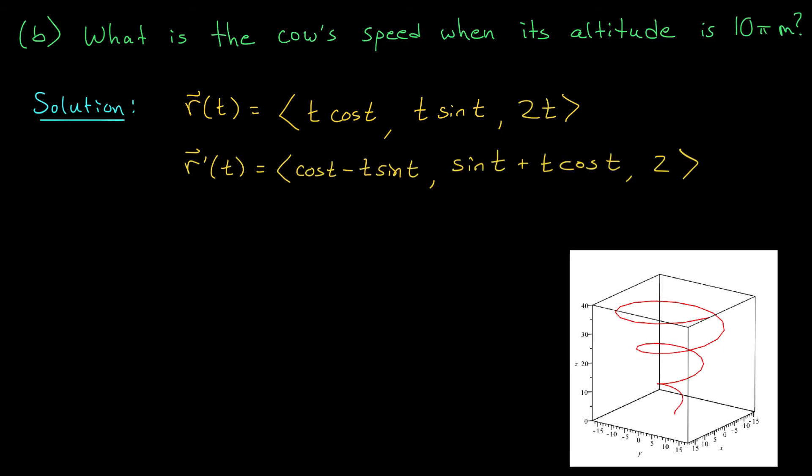Moving on to the second part of our problem, we're looking for the cow's speed when it reaches an altitude of 10 pi meters. As a quick reminder, the cow's position is given by this vector function, r of t, and its velocity is given by this function, r prime t. I'll also remind you that the cow's speed is given by the magnitude of its velocity vector, the norm of r prime at some time t. But what time?